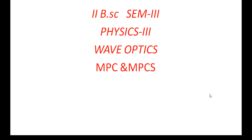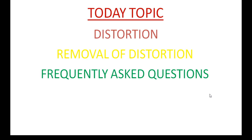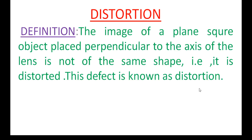Today my class is for 2nd BSc 7.3 for physics combination groups. I am going to discuss about what is distortion, how to minimize distortion, and frequently asked questions in this first unit. Distortion is the last type of aberration in monochromatic aberrations and this is the last topic in unit 1.